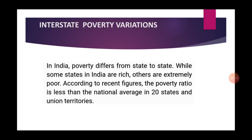Recent estimates show that in 20 states and union territories the poverty ratio is less than the national average. On the other hand, poverty is still a serious problem in Odisha, Bihar, Assam, Tripura and Uttar Pradesh. Odisha and Bihar continue to be the two poorest states with poverty ratios of 47% and 43% respectively. Along with rural poverty, urban poverty is also high in Odisha, Madhya Pradesh, Bihar and Uttar Pradesh.